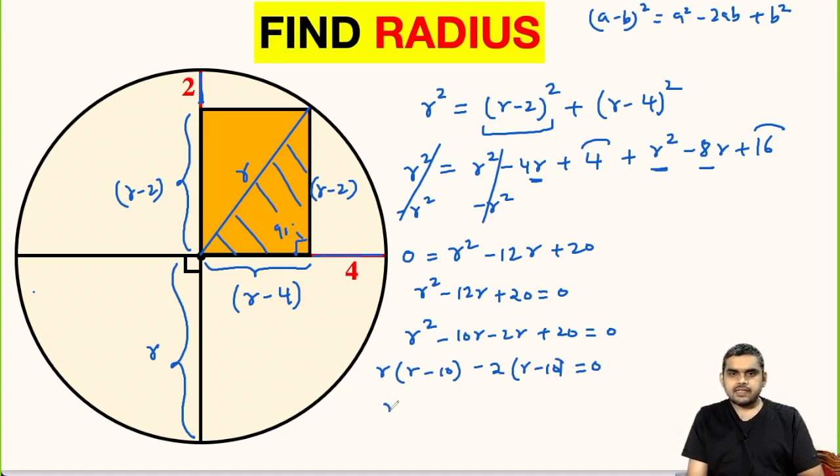Again, we can take r minus 10 outside and multiplied with r minus 2 equal to 0. From here we get r equal to 10 and from here r equals 2.